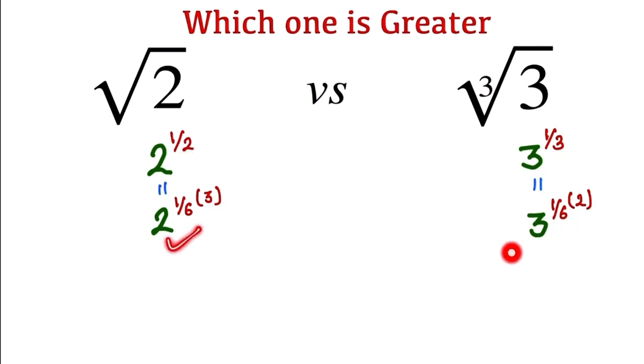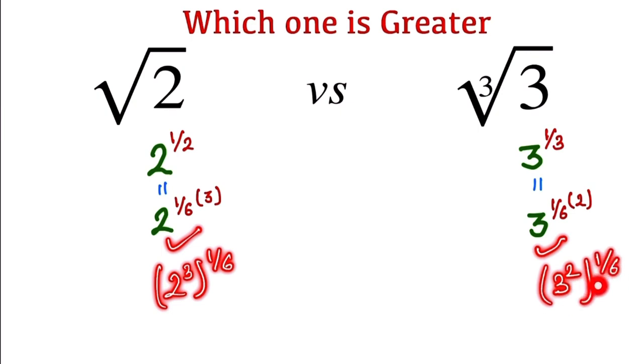So now we change the power. So 2 to the power 3, the whole power is 1/6. And here 3 to the power 2, and the whole power is 1/6.